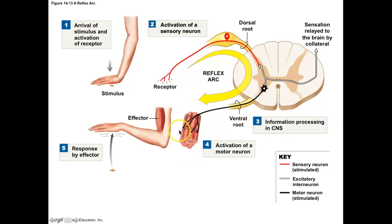So if it involves more than one muscle group, you're going to have to have an interneuron involved, and that's going to be polysynaptic. Reflexes do not involve the brain — the brain finds out a little bit later — but it's a protective mechanism so that you can move your body away from painful stimulus.